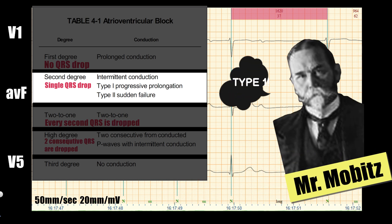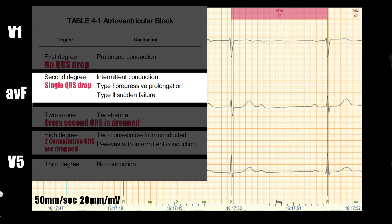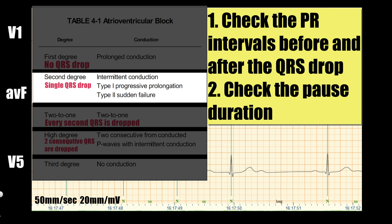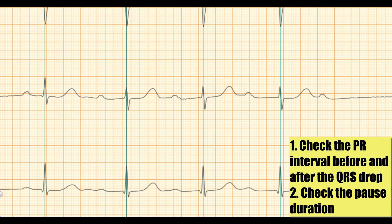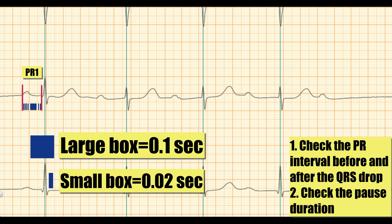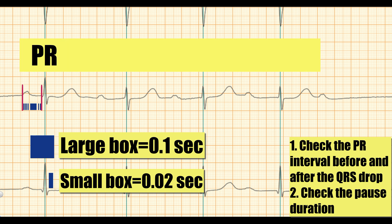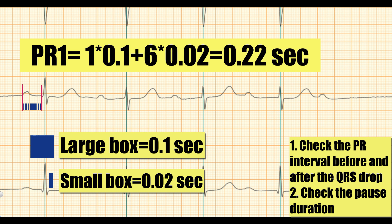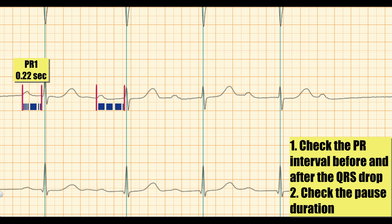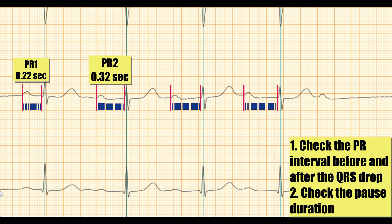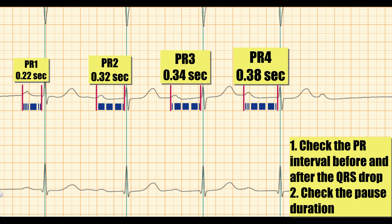2nd degree AV block can be Mobitz 1 (type 1) or Mobitz 2 (type 2). To distinguish them, we check the PR interval before the drop and the first PR after the drop, plus the duration of the pause. The first PR interval consists of one large box and six small boxes, equaling 0.22 second. The second PR equals 0.32 second, the third 0.34 second, and the fourth 0.38 second.